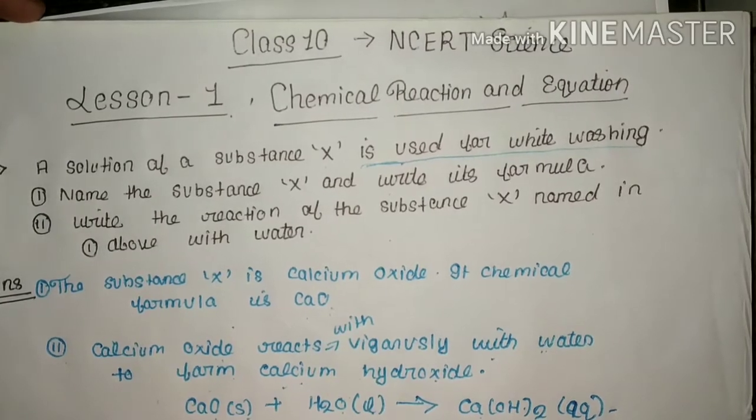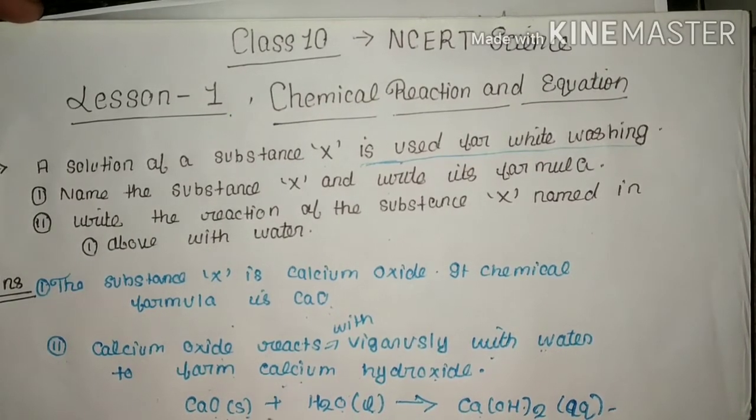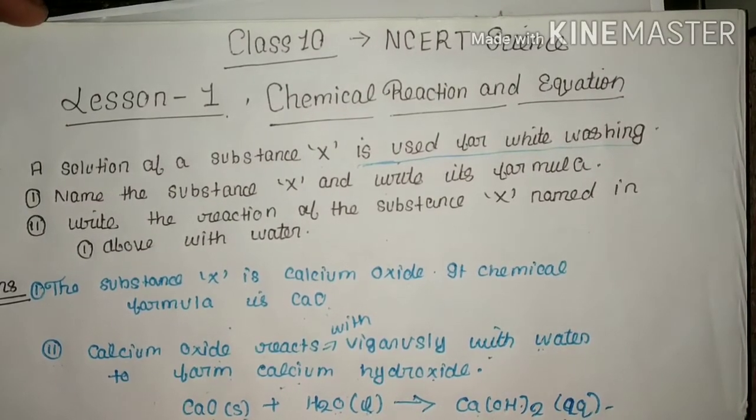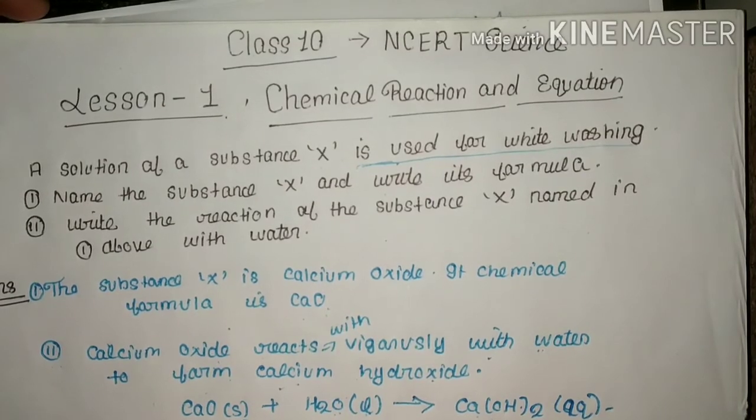The chemical equation is: CaO in solid form reacts with water in liquid form to produce calcium hydroxide, Ca(OH)2, in aqueous form. Thanks for watching.